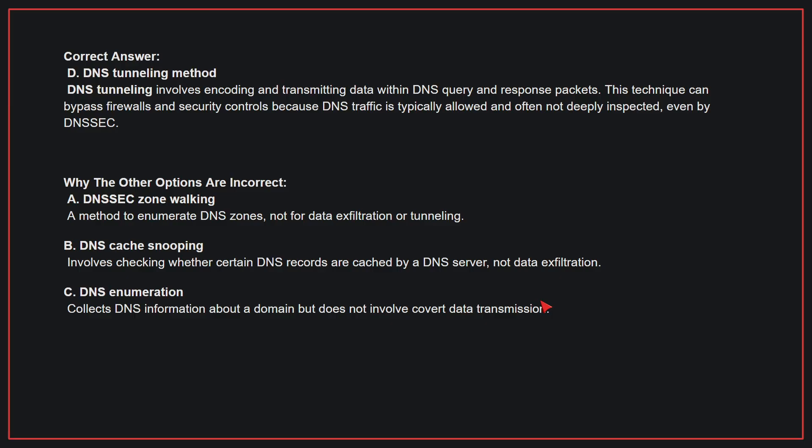Why the other options are incorrect: A, DNSSEC zone walking — this is a method to enumerate DNS zones, not for data exfiltration or tunneling. B, DNS cache snooping — this involves checking whether certain DNS records are cached by a DNS server, not data exfiltration. C, DNS enumeration — this collects DNS information about a domain but does not involve covert data transmission. Therefore, the correct answer is D.